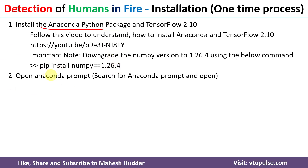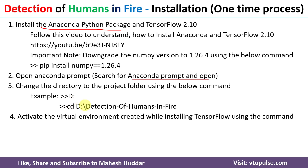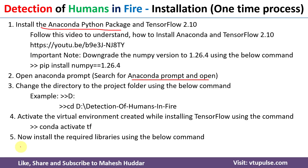After that, you need to open the Anaconda prompt — you can search for it and open it. Next, change the directory to the project folder. Assuming the project is in the D drive, first shift to the D drive using the D: command, then shift to the project folder using the cd command. Once the directory is set, activate the virtual environment created while installing TensorFlow using the command: conda activate tf. Then install the required libraries using: pip install -r requirements.txt.